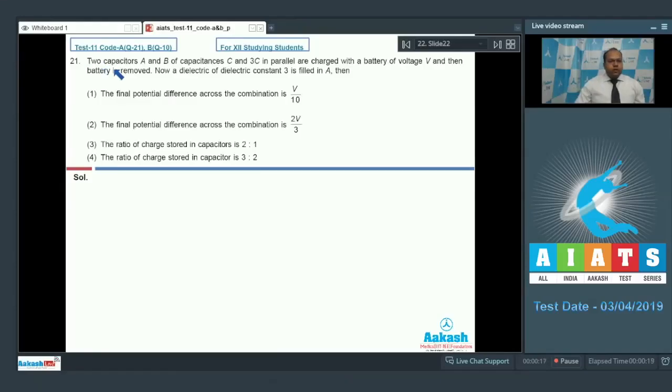In question number 21, two capacitors A and B of capacitances C and 3C in parallel are charged with a battery of voltage V and then the battery is removed. Now a dielectric of dielectric constant 3 is filled in A.